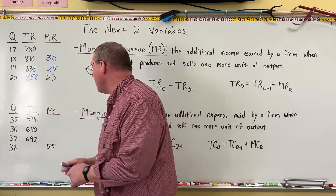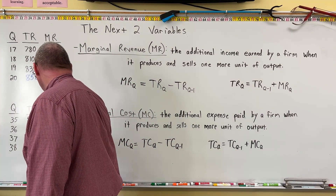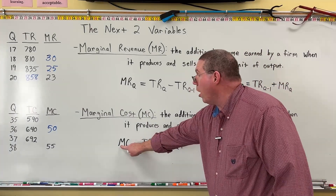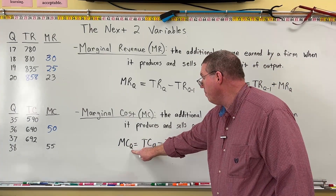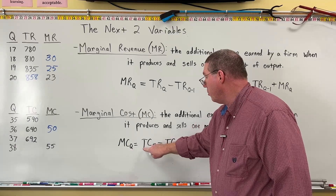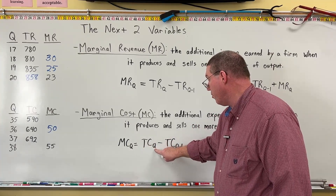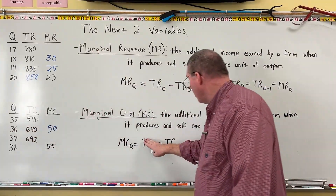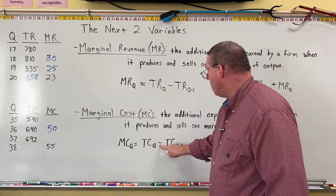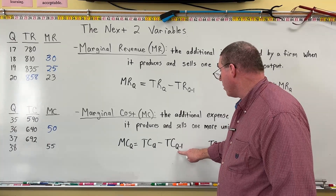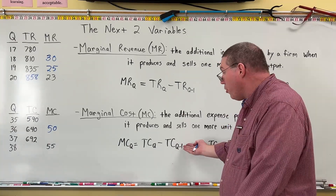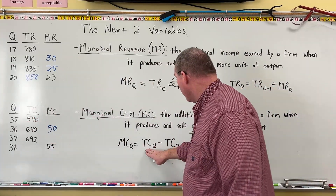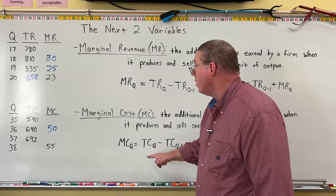To find marginal cost of 36, we take total cost for 36 minus total cost for 35: 640 minus 590 is 50. So the marginal cost of the 36th unit is 50. The formula: MC of Q=36 equals total cost of 36 (which is 640) minus total cost of 35 (which is 590). 640 minus 590 equals 50.